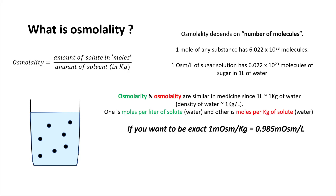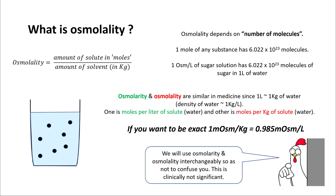Osmolarity and osmolality are pretty similar in medicine because one liter of water weighs one kilogram. While osmolarity is measured in moles per liter, osmolality is measured in moles per kilogram. To be exact, 1 milliosmol per kg equals 0.985 milliosmol per liter, but this is clinically not significant.